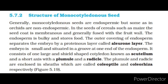Structure of monocotyledonous seed. Generally, monocotyledonous seeds are endospermic, but some, as in orchids, are non-endospermic. In the seeds of cereals such as maize, the seed coat is membranous and generally fused with the fruit wall. The endosperm is bulky and stores food. The outer covering of endosperm separates the embryo by a proteinous layer called the aleurone layer. The embryo is small and situated in a groove at one end of the endosperm. It consists of one large and shield-shaped cotyledon known as scutellum and a short axis with a plumule and a radicle. The plumule and radicle are enclosed in sheaths which are called coleoptile and coleorhiza respectively.